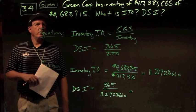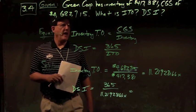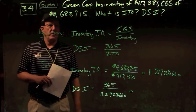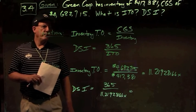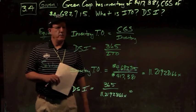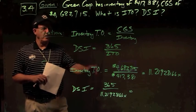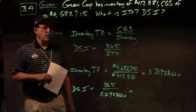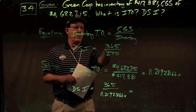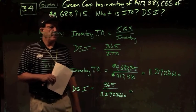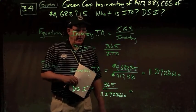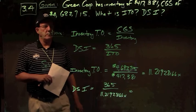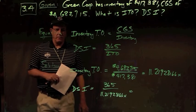In problem 3.4, we have Green Corp with inventory of $417,381 and cost of goods sold of $4,682,715. What's their inventory turnover and what is their day sales in inventory? Inventory turnover is the exception to the general rule — instead of sales over anything, it's cost of goods sold off the income statement divided by inventory off the balance sheet. Day sales in inventory is 365 divided by that inventory turnover number.